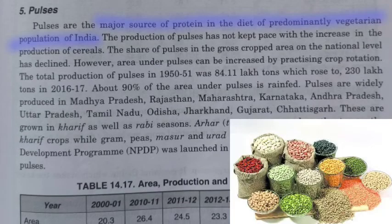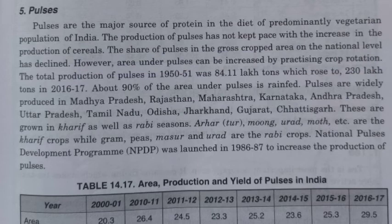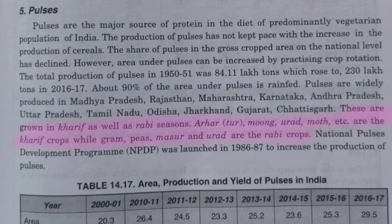Pulses are the next important food crop, and India is the largest producer of pulses in the world. Pulses are a major source of protein in the vegetarian diet. Though pulse production has not received as much attention as cereal production, it is now increasing due to the practice of crop rotation. About 90 percent of pulse-cultivated area in India is rain-fed. Major producing states include Madhya Pradesh, Rajasthan, Maharashtra, Karnataka, Andhra Pradesh, Uttar Pradesh, Tamil Nadu, Odisha, Jharkhand, Gujarat, and Chhattisgarh.